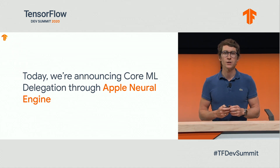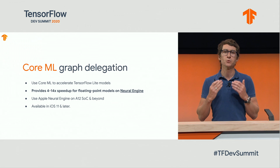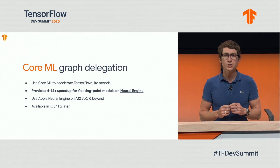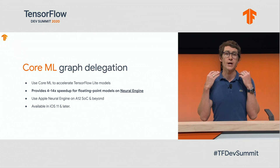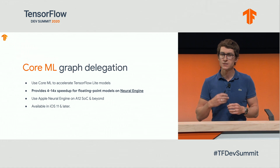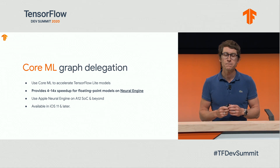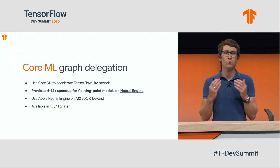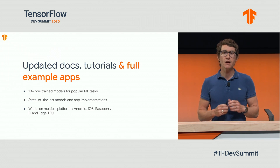The delegate will run on iOS 11 and later, but to get benefits over using TF Lite directly, you'll want to use this delegate on devices with the Apple Neural Engine. The Neural Engine is dedicated hardware for accelerating machine learning computations on Apple's processors, and it's available on devices with the A12 SOC or later, such as the iPhone XS with iOS 12 or above. With the Neural Engine acceleration, you can get between 4 to 14 times speedup compared to CPU execution.